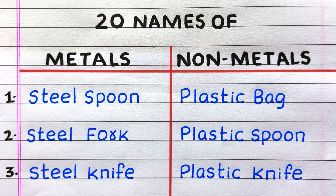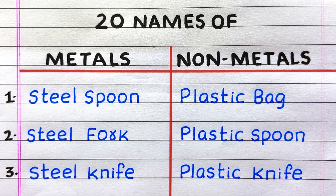Let's take a look. The first example of a metal is steel spoon. Second, steel fork. Third, steel knife.